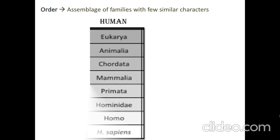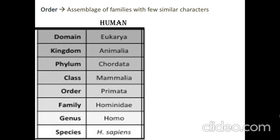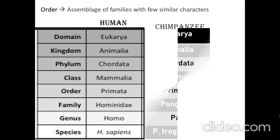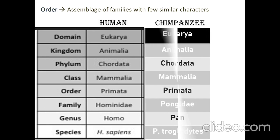Next is order — it includes various families with a few similar characters. If we study the human taxonomy, we fall under the order Primates along with chimpanzees. We have similarities with chimpanzees at the order level, even though our family and the chimpanzee family are different.